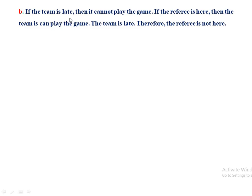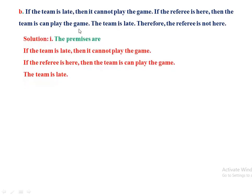Question B: if the team is led then it cannot play the game; if the referee is here then the team can play the game; the team is led — therefore the referee is not here. The premises are the first three statements and the conclusion is 'the referee is not here.'